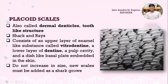The third type is placoid scales, also called dermal denticles because they have a tooth-like structure. They are found in sharks and rays. Placoid scales consist of an upper layer of enamel-like substance called vitrodentine, a lower layer of dentine, a pulp cavity, and a disc-like basal plate embedded in the skin. Placoid scales do not increase in size; new scales must be added as a shark grows.